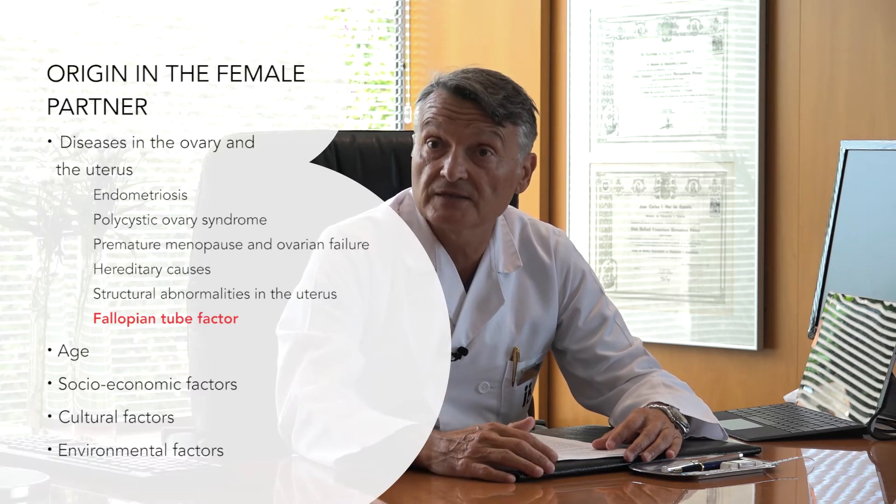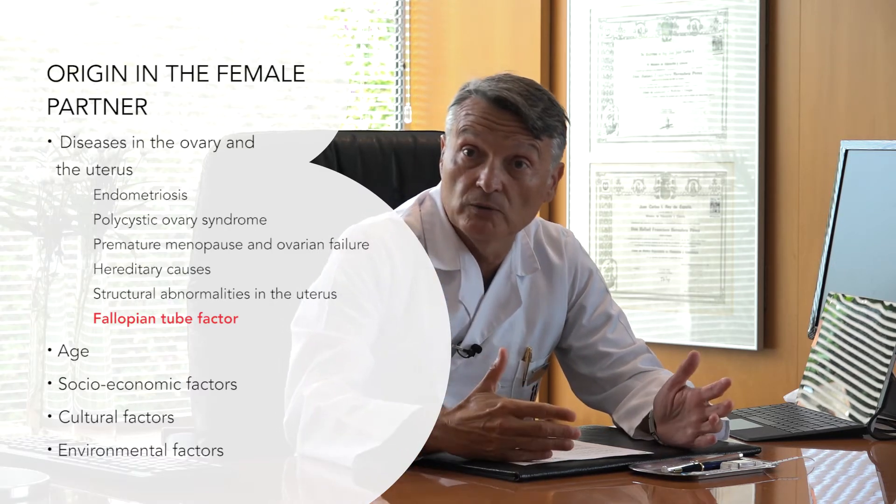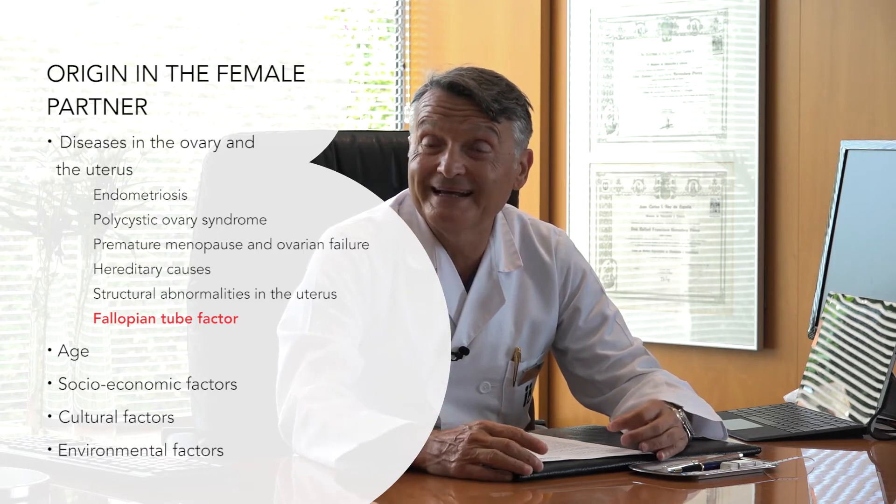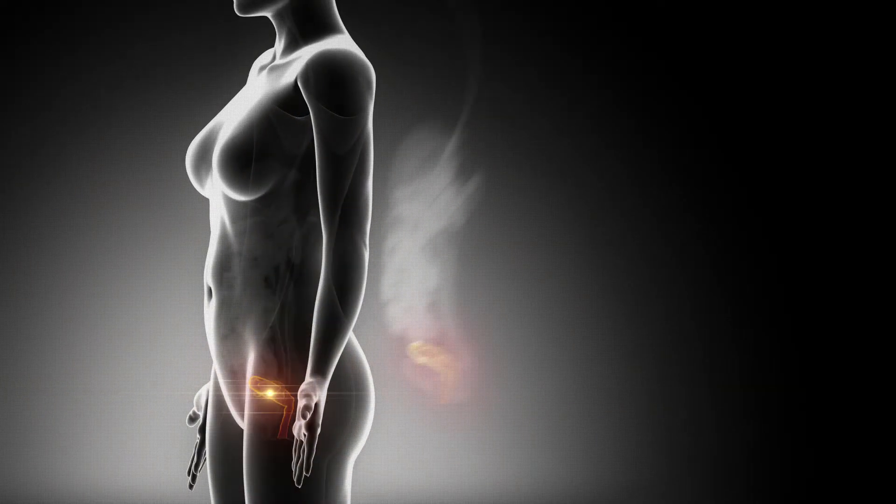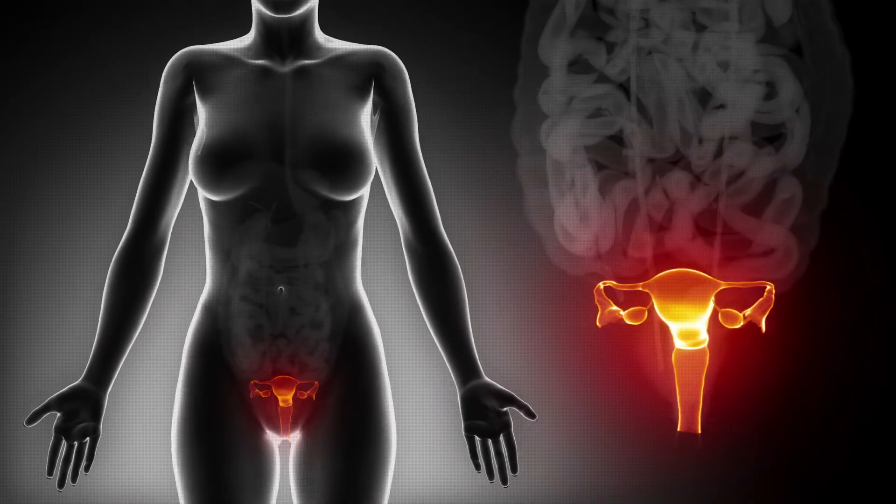We mustn't forget to mention causes within the fallopian tubes, the organ that joins the uterus to the ovary. The fallopian tubes play an essential role during in vivo fertilization and may have been damaged, mainly as a result of infections or inflammation. The uterus can also be the area of the body causing issues because the embryo needs to implant there. Malformations of the uterus, the after-effects of interventions, and the after-effects of infections can notably decrease the uterus' ability to host the embryo.